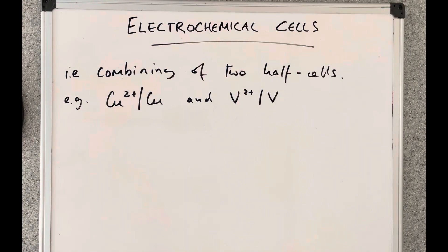In this video I'm going to take a look at electrochemical cells. These are formed when you combine two half cells together. The example I'm going to use is from the combination of the copper 2 plus copper half cell with the vanadium 2 plus vanadium half cell.